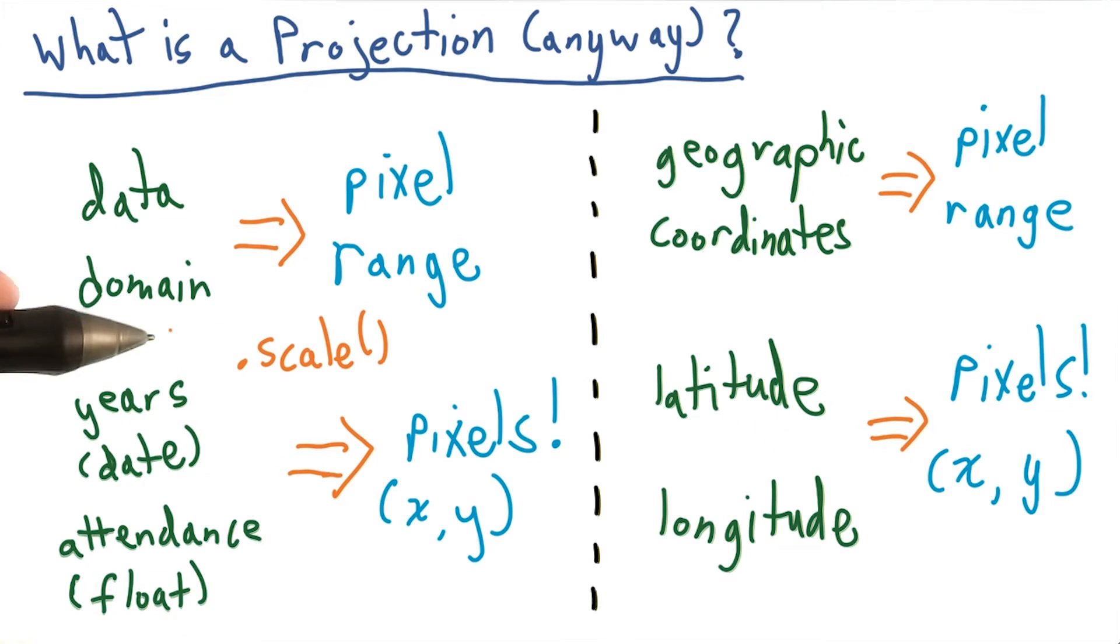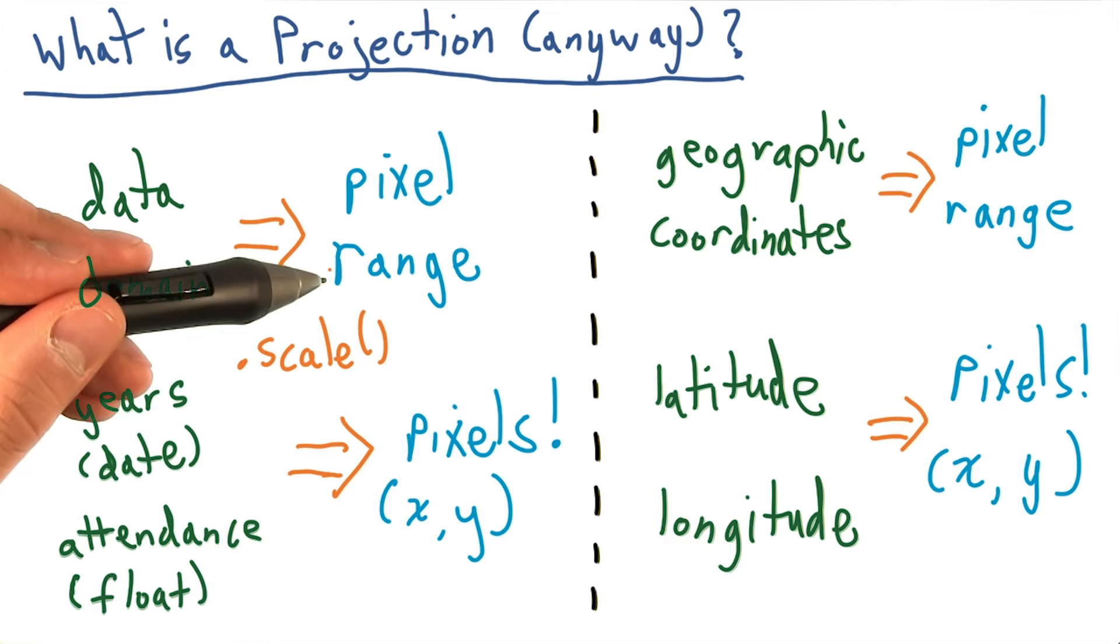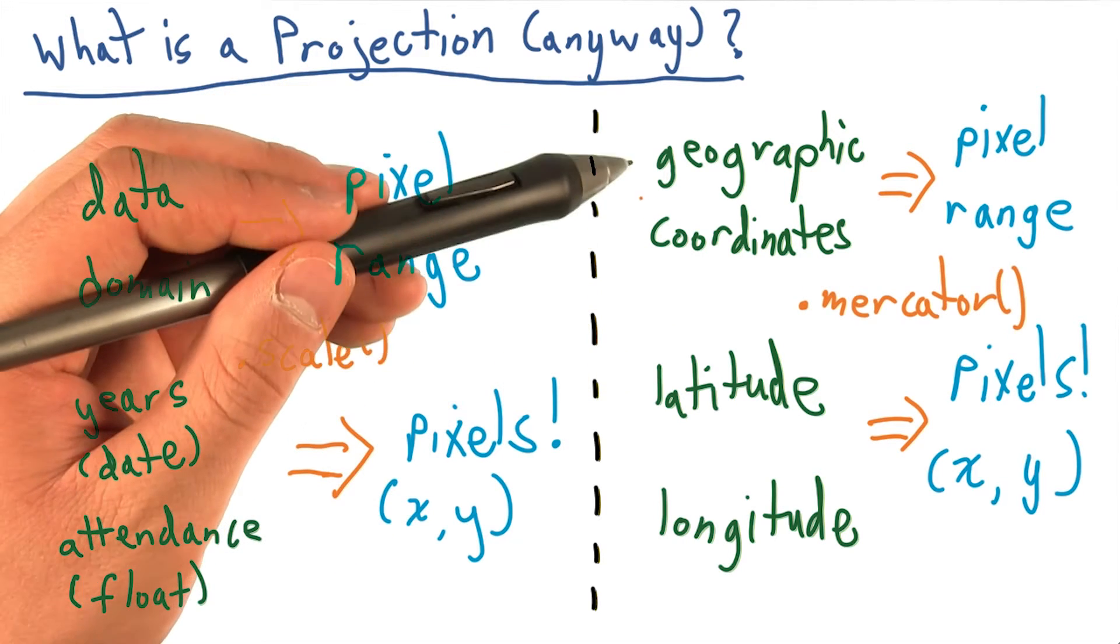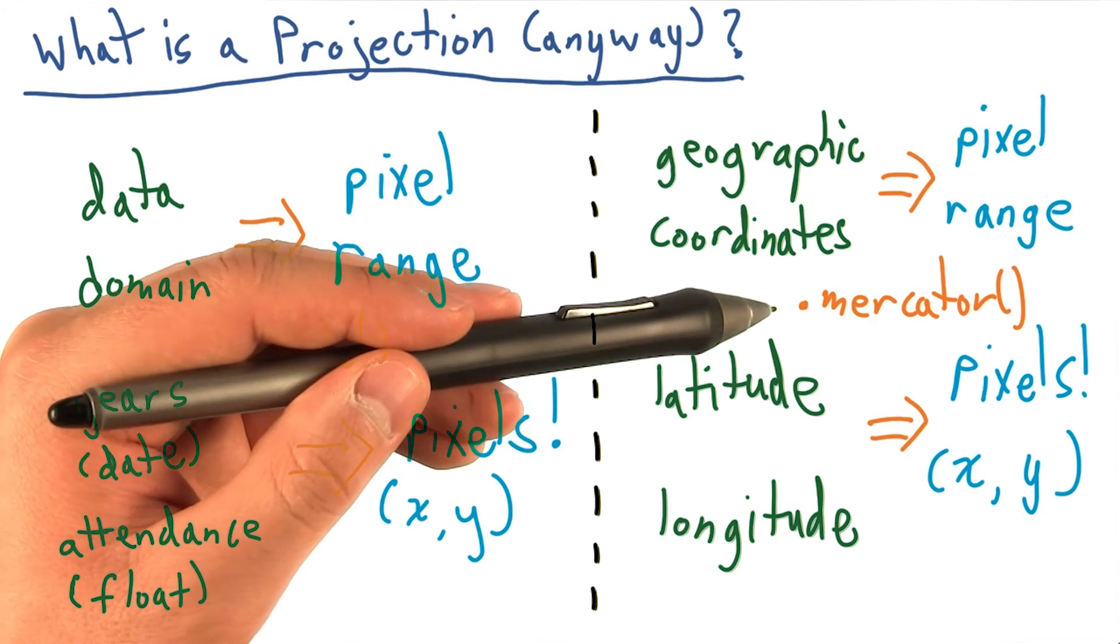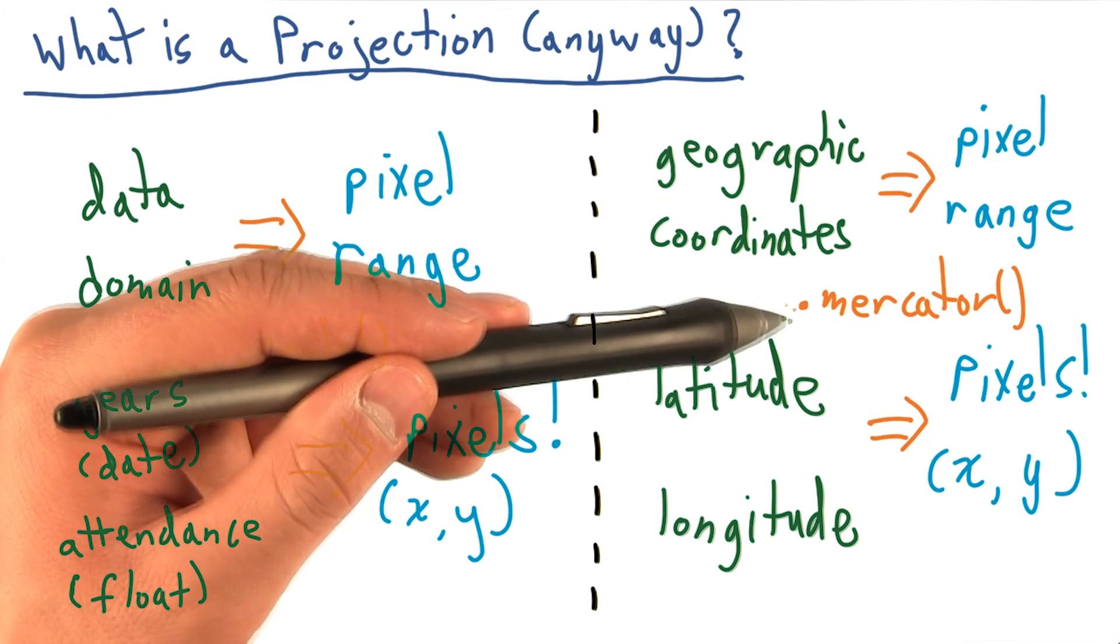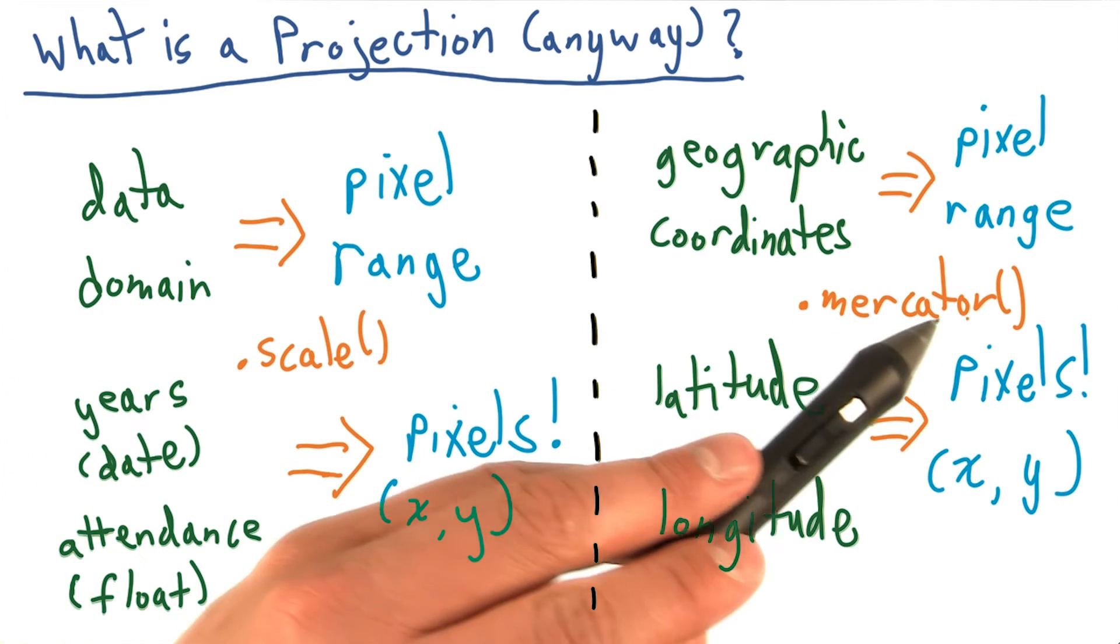In the scatter plot, we used D3's scale to go from our data domain to our pixel range. And in a very analogous way, to convert our geographic coordinates to a pixel range, we have to use a projection, or more specifically, in our case, we'll be using the Mercator projection.